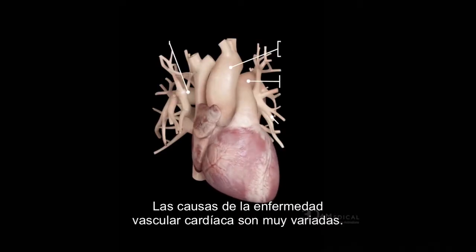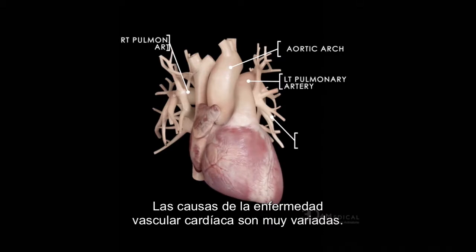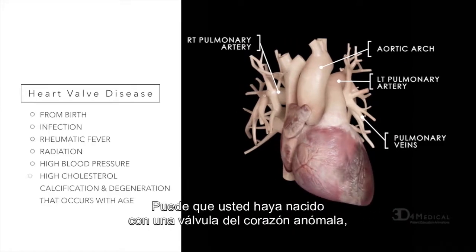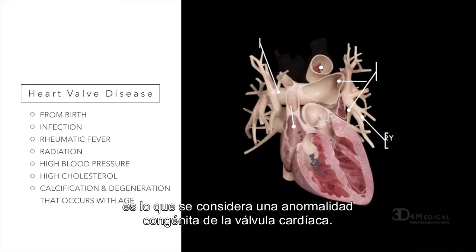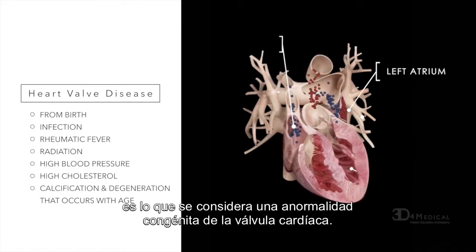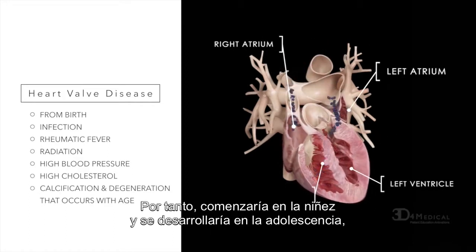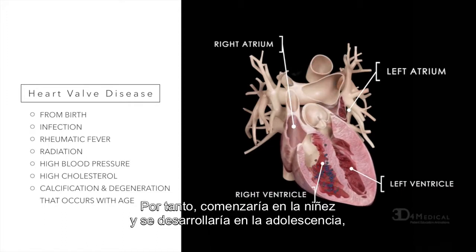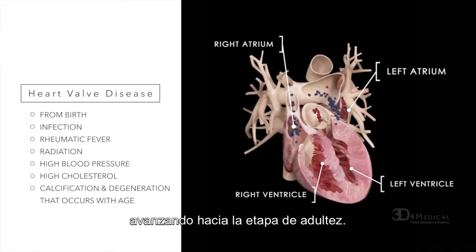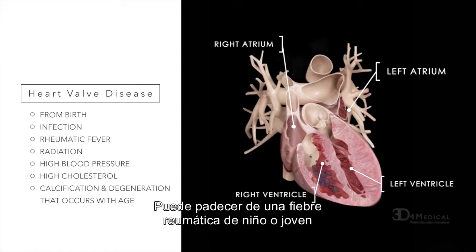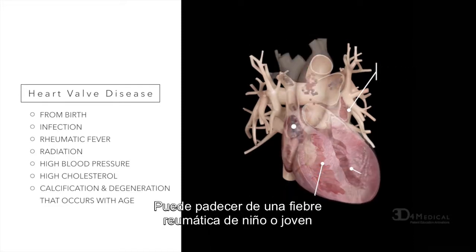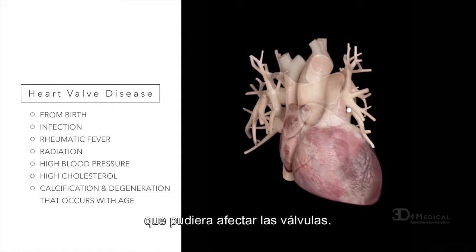The causes of heart valve disease are really quite multiple. First of all, you could be born with an abnormal heart valve — that is considered a congenital abnormality of the heart valve — and that would start in young childhood and then progress through adulthood. Otherwise, you can develop an infection on the heart valve, or rheumatic fever as a child or young adult that can affect the heart valve.